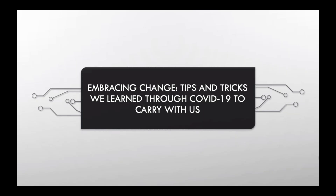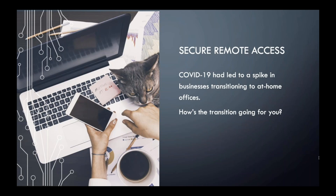Hello everyone. COVID-19 has led to a huge spike in working from home, in some cases with little or no preparation. It's very important to ensure that your remote access solution is secure, reliable, and easy to use for your workforce. One remote access solution that many of you are probably familiar with is VPN, or virtual private network. It's a common way of accessing on-premise or cloud resources in your environment securely. In some cases, it's used in conjunction with a solution like RDP, so you can log directly into your office desktop.